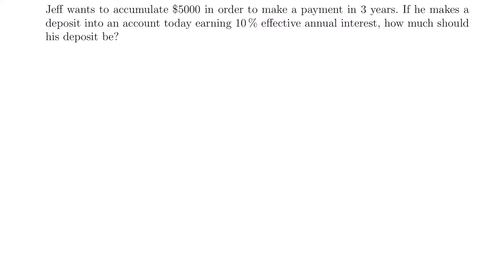This question is asking how much should you deposit in an account today — that is a huge indicator that we are looking at present value and not future value, because future value is about accumulation and values in the future, while present value is about values today. We know that the future value, or the amount Jeff wants to accumulate, P of T, is equal to $5,000.